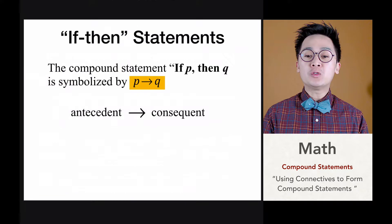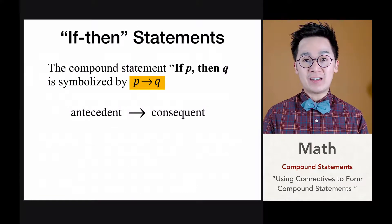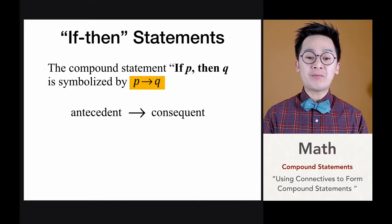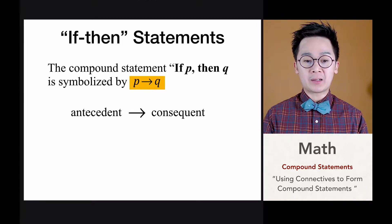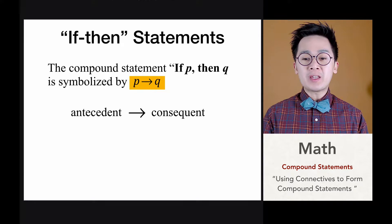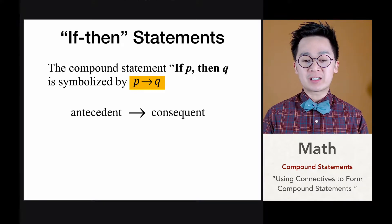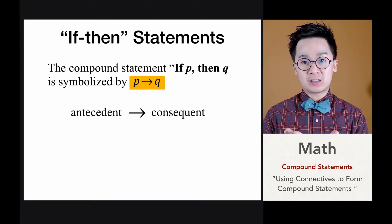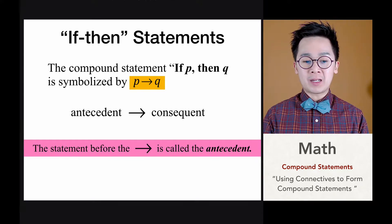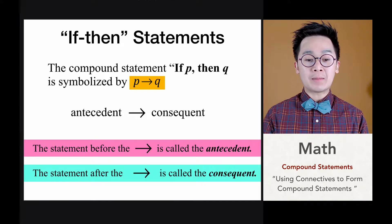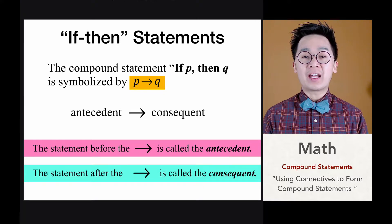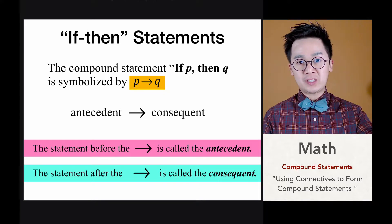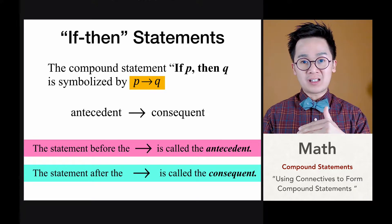Now let's move on to the third connective: the IF-THEN statement. The compound statement IF P THEN Q is symbolized by an arrow pointing from P toward Q. This is also known as a conditional statement. In this statement we have two parts: the antecedent is the statement before the arrow, and the consequent is the statement after the arrow.